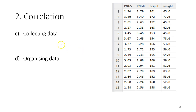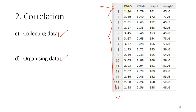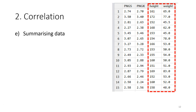The next step is to collect data. After you collect data, you have to organize it — here we have data collected from 15 students, and for each student we measure the semester grade point average and the cumulative grade point average.